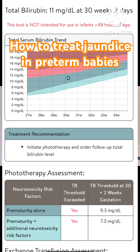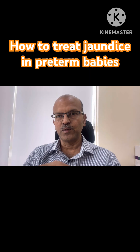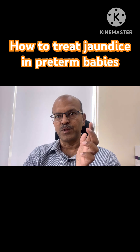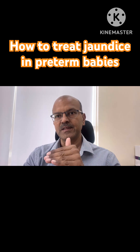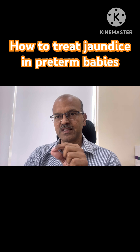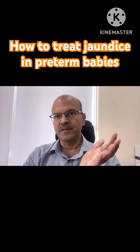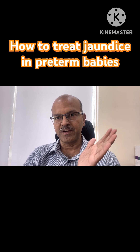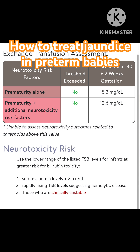Once you enter this data and submit, similar to the bilirubin tool, it gives you the treatment threshold — whether the baby is simply premature or has a risk factor. The neurotoxicity risk factors include albumin level less than 2.5 in premature babies (compared to less than 3 in the AAP guidelines), a clinically sick baby, and evidence of hemolysis. If these risk factors are present, the treatment threshold is different.